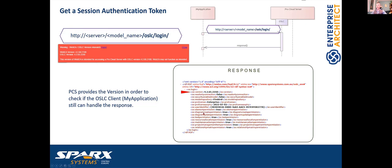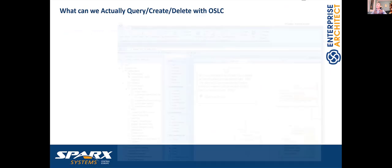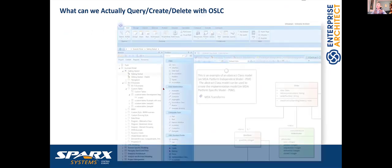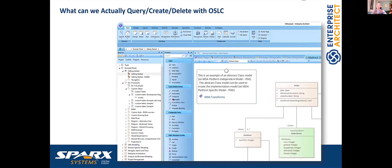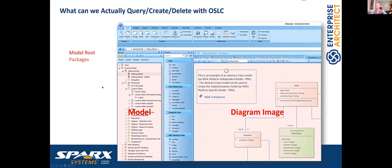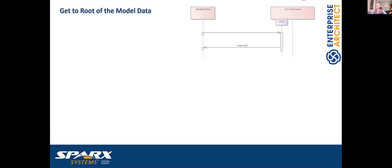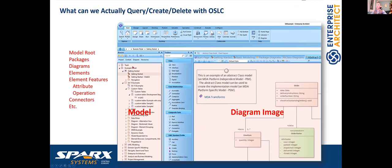What can we query from the model? Actually a lot. We can query the model root packages, diagrams, elements, diagram images, and all element features like operations, receptions, attributes, connectors between elements, and many additional meta informations we can store in the model. When we implement an OSLC client we need something similar to how WebEA looks.